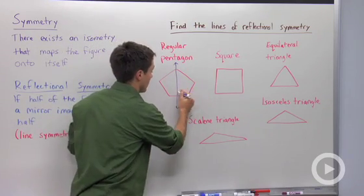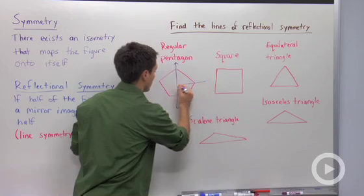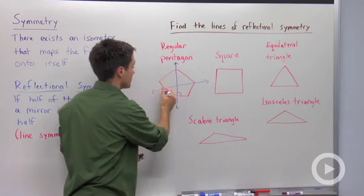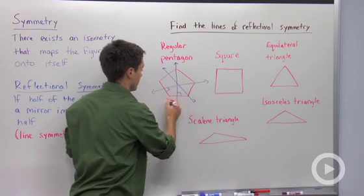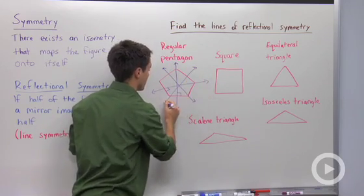I could draw a perpendicular through each one of these vertices, perpendicular to the opposite side, for a total of five lines of reflectional symmetry.